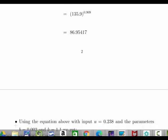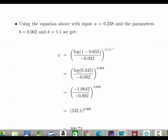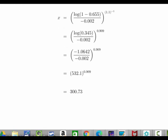Just doing the exact same thing again, but this time we're using 0.655. Log of 0.345 divided by minus 0.002 to the power of, all to the power of 0.909. Work that out and we get 532.1 to the power of 0.909 and that works out to be 300.73.